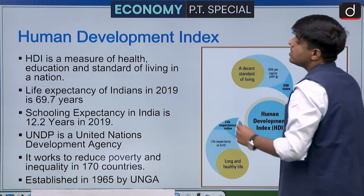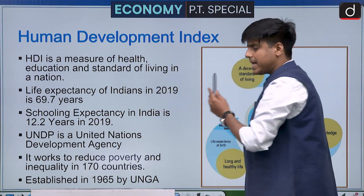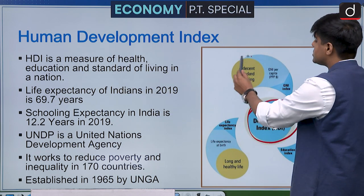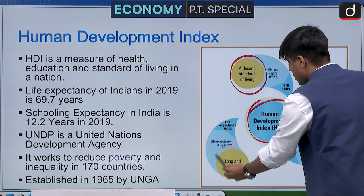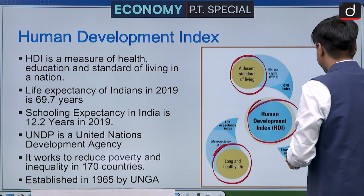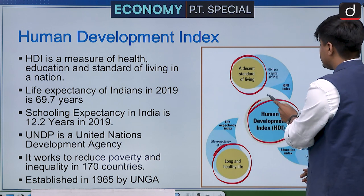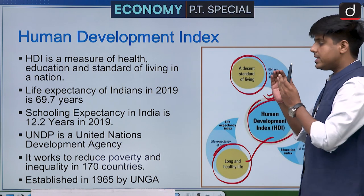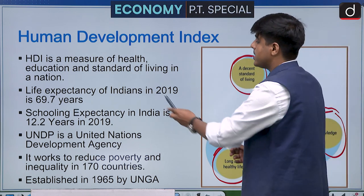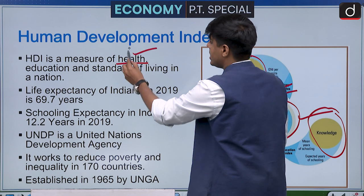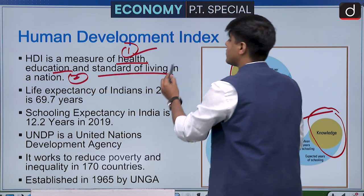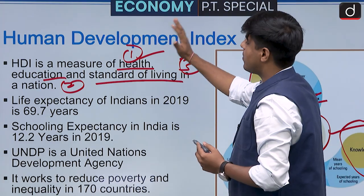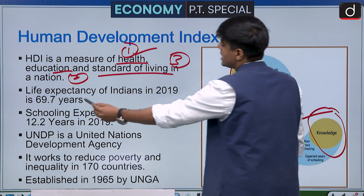HDI measures three factors: health, education, and standard of living — specifically a decent standard of living, a long and healthy life, and knowledge. These three factors determine the HDI rank of any country and form the core of the HDI index.